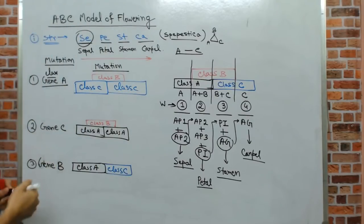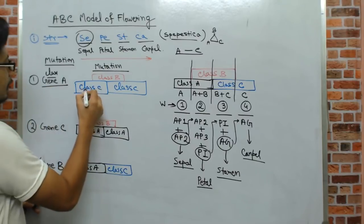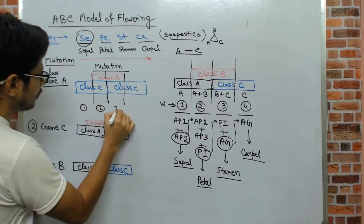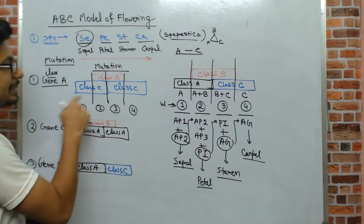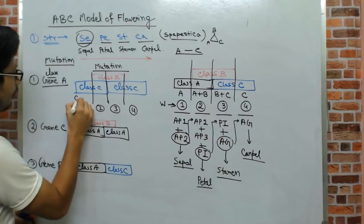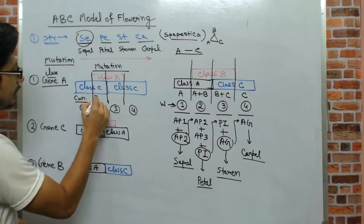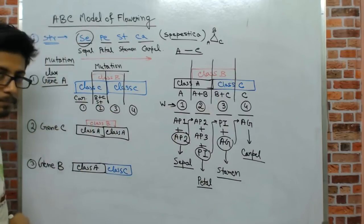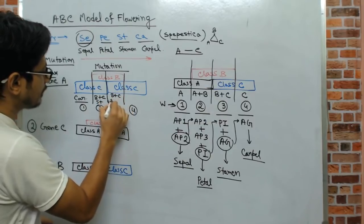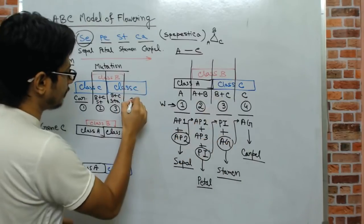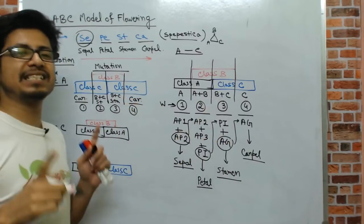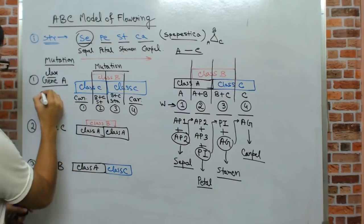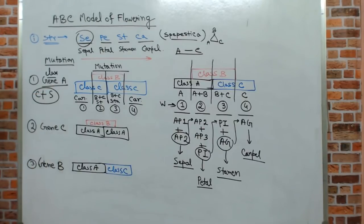With class A gene mutation, let's go through the four whorls. Whorl 1: C only — that gives carpel. Whorl 2: B plus C — that gives stamen. Whorl 3: B plus C — stamen again. Whorl 4: C only — carpel again. So if class A genes are mutated, the plant's flower will have only carpel and stamen.